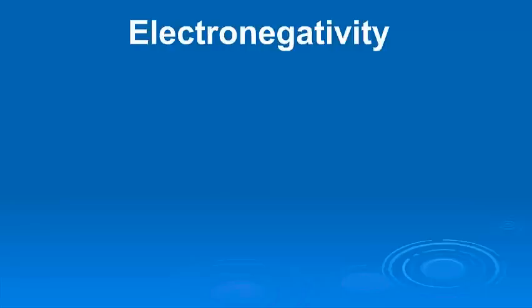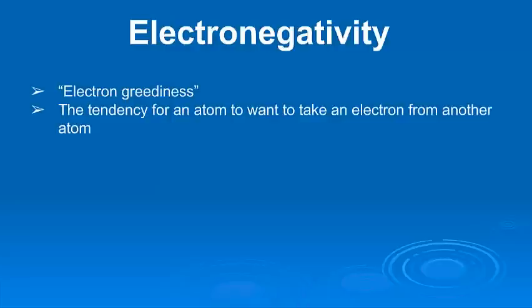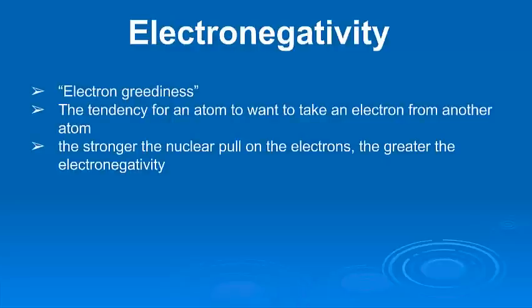Finally, we have electronegativity. Now, I like to describe electronegativity as electron greediness. In other words, the tendency for an atom to want to take an electron from another atom. The stronger the nucleus is pulling on those valence electrons, the greater that electronegativity is going to be. The more it's going to want to pull on other electrons.